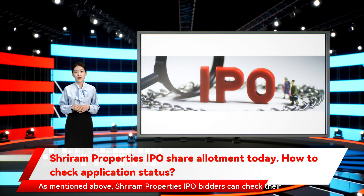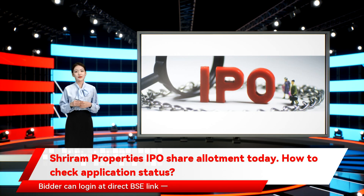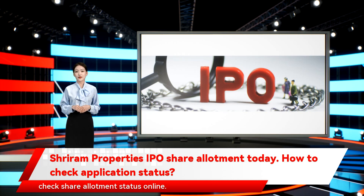As mentioned above, Shriram Properties IPO bidders can check their application status online by logging in at the BSE website or at the KFintech website. Bidders can log in at the direct BSE link — bseindia.com/investors/appli_check.aspx — or at the direct KFintech link — kprism.kfintech.com/ipostatus — and check share allotment status online.